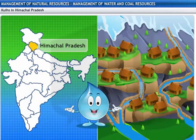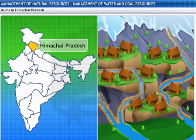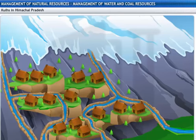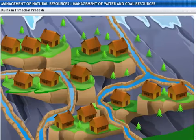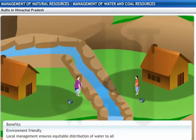Our first stop is a small village in Himachal Pradesh, where the locals use a system of Kulls. A Kull is a system of man-made channels that diverts available water from streams to several villages down the hillsides. The benefit of this system is that it causes no damage to the environment. Also, local people manage the Kulls themselves and ensure fair and equitable distribution of the water.